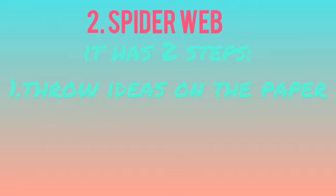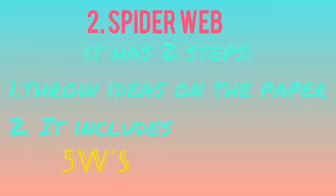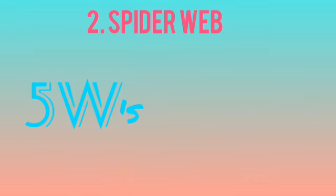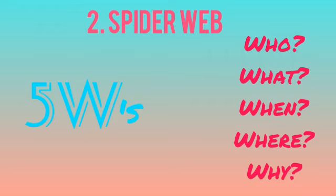Number 2 is Spider Web. It has two steps. Step 1: throw ideas on the paper from the brainstorming you had. Step 2: it includes the 5 W's plus How. The 5 W's are: Who, What, When, Where, and Why. These questions should come to your mind after brainstorming.